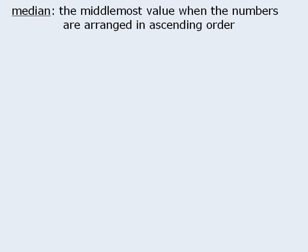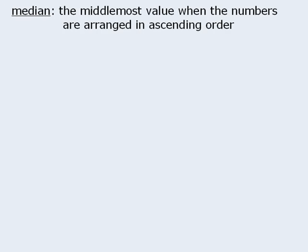Another way to describe a set of numbers is to use the median. The median is defined as the middlemost value of a set when the numbers in that set are arranged in ascending order. Now, when determining the median, we need to consider two cases.